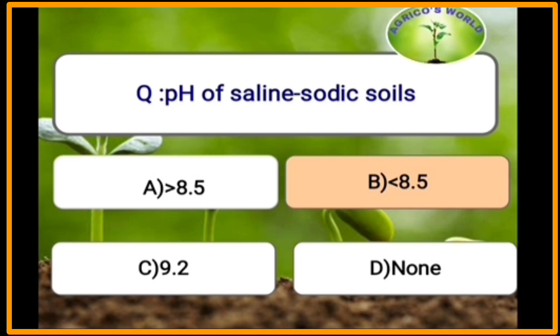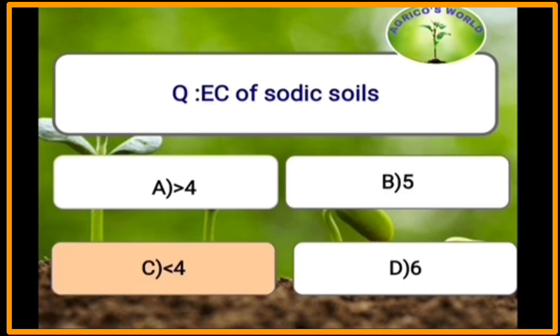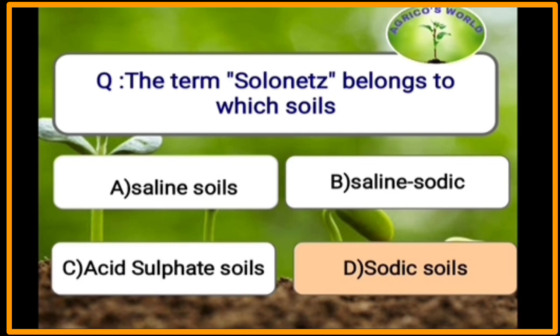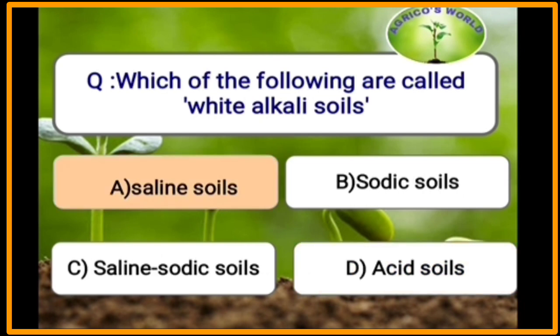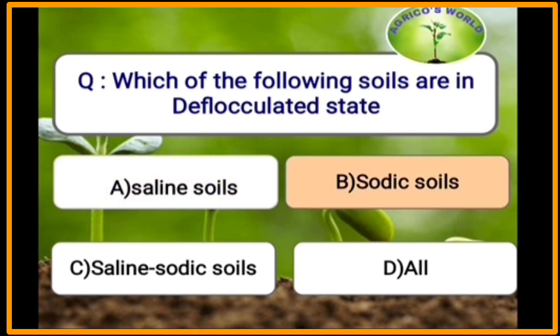The pH of saline sodic soils is less than 8.5. The electrical conductivity of sodic soils is less than 4. The term solenetes belongs to sodic soils. Sodic soils are also called white alkali soils, and they are in a deflocculated state.